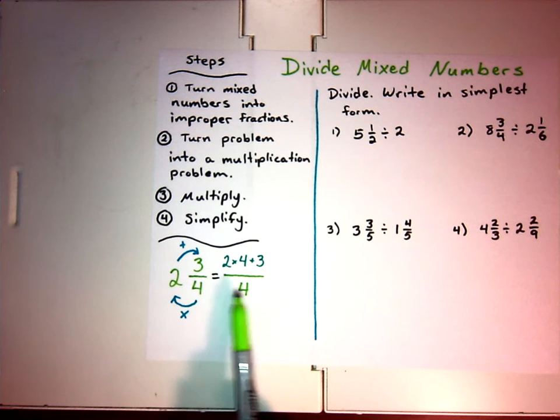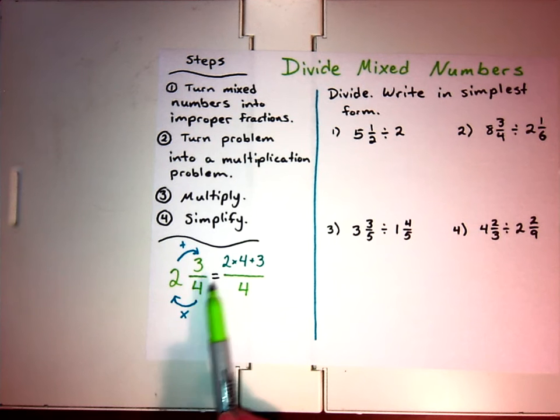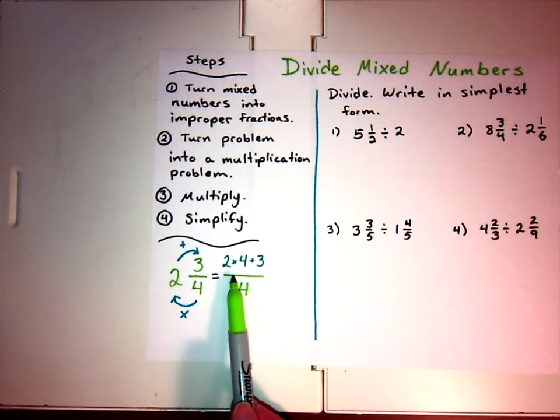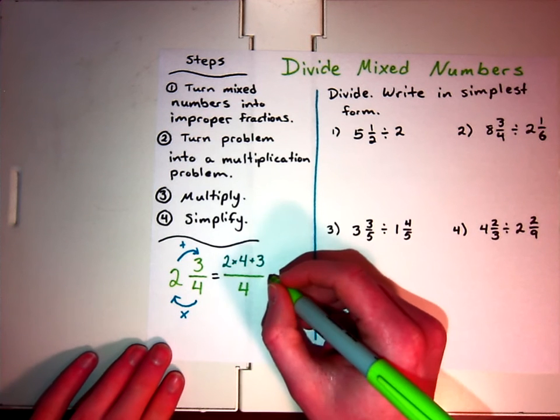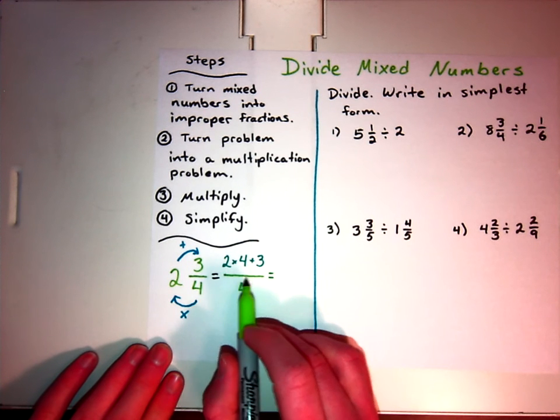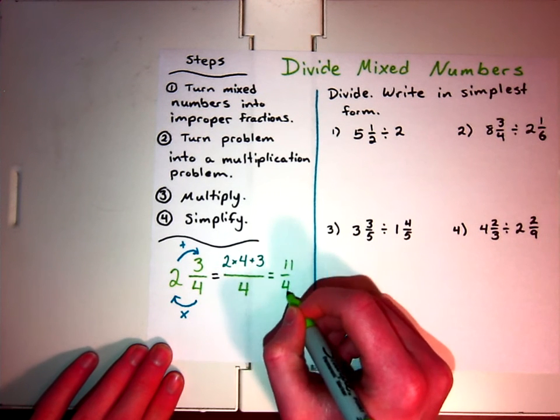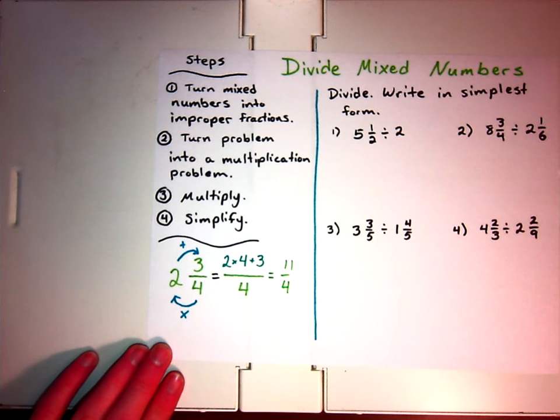So in the example here, we have 2 times 4, so I multiply those, is going to be 8, and that's going to be added to 3. So our answer would be 2 times 4 is 8, plus 3 is 11 fourths. And when we get this improper fraction, that's going to make it much easier to multiply.